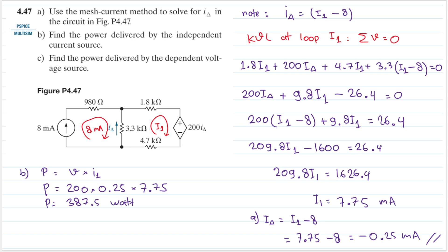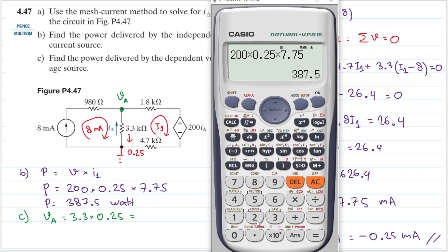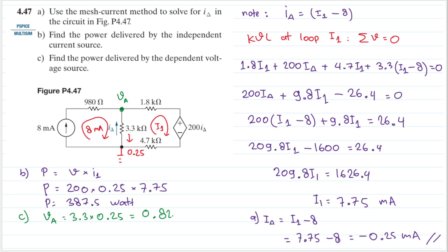For the power delivered by the dependent voltage source, we need the voltage. We know i_delta is 0.25 milliampere. If we set this node as our ground, we can find the voltage here — let's name it va. So va equals 3.3 multiplied by 0.25, and calculating that gives va equals 0.825 volt.